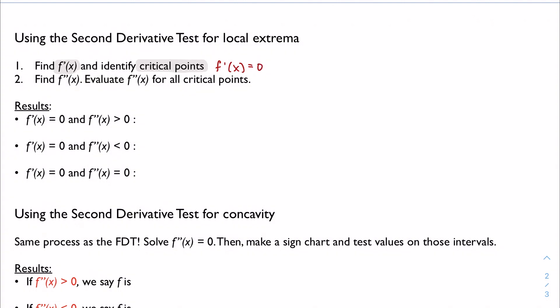And then because this is the second derivative test, we're gonna find the second derivative, and we're gonna evaluate it for all of the critical points that I got. And depending on the outcome, that's gonna tell me if I have a local max or min.